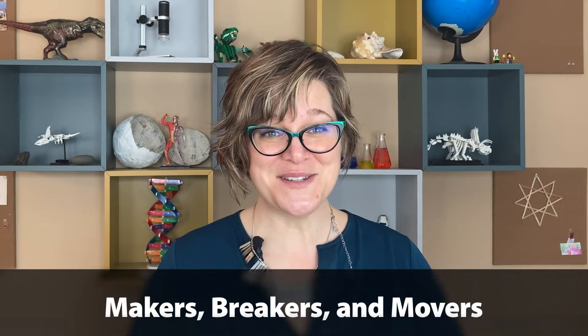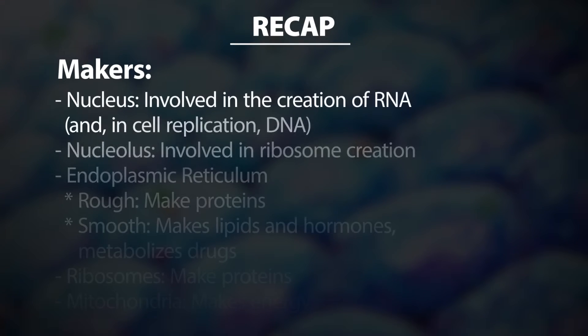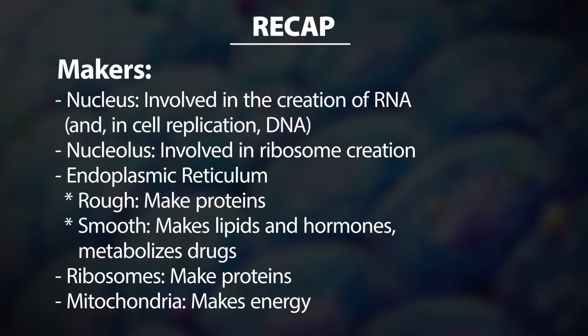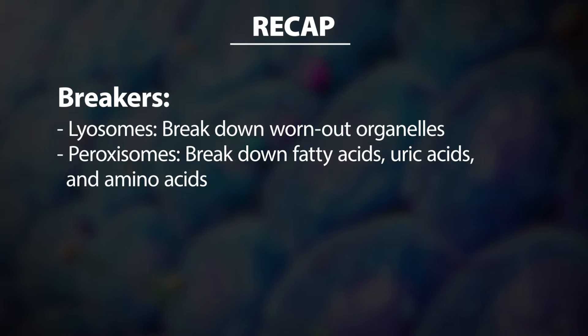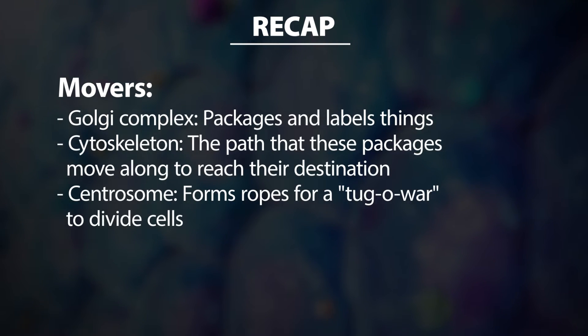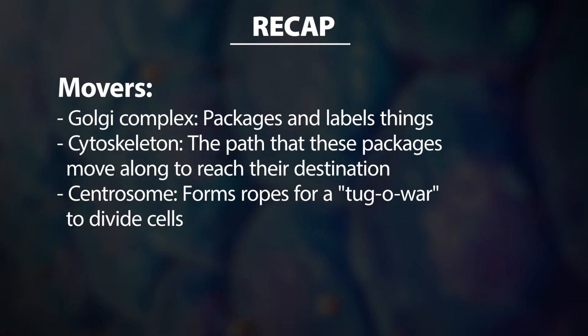Recap time! Makers make things that cells need to survive, like proteins. These include the nucleus, nucleolus, endoplasmic reticulum, ribosomes, and mitochondria. The breakers break down items no longer needed by the cell, such as worn-out organelles and wastes — these include lysosomes and peroxisomes. And movers are involved in moving all of these things where they need to go — these include the Golgi complex, cytoskeleton, and the centrosome. Don't forget to like and subscribe for our next video on different types of cells and how their structures are adapted to their functions.